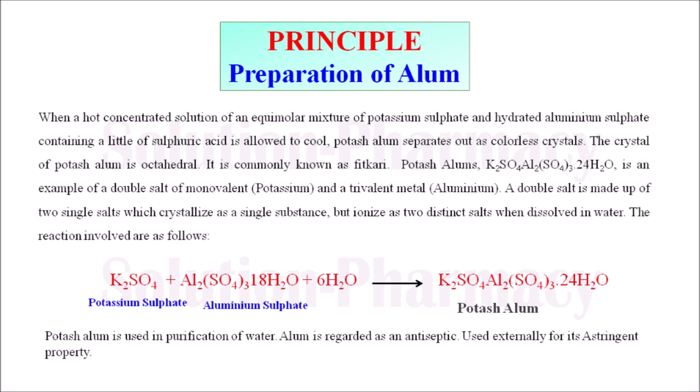The trivalent metal is aluminum. A double salt is made up of two single salts which crystallize as a single substance, but when dissolved in water it ionizes into two distinct salts.